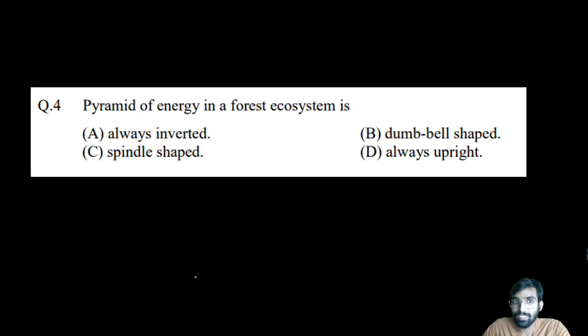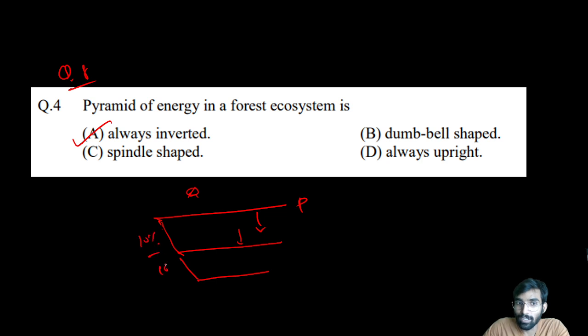Question number eight: The pyramid of energy in a forest ecosystem is always inverted, spindle shaped, dumbbell shaped, or always upright? Pyramid of energy - think. It's always inverted. From direct sun you are getting to the producer, the plant, then the animals who feed on the plant like goat and sheep, then from there lion and tiger. Always there will be some 10 percent lower, that's why the energy pyramid is always inverted.